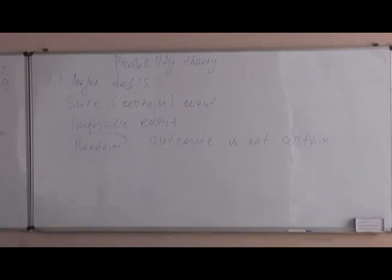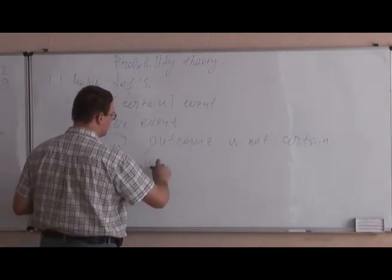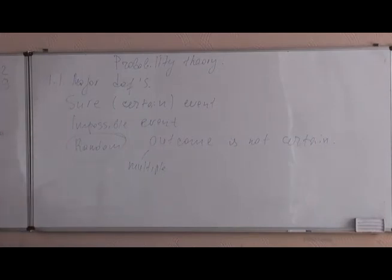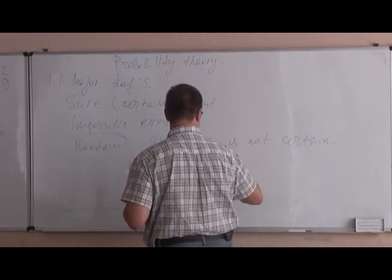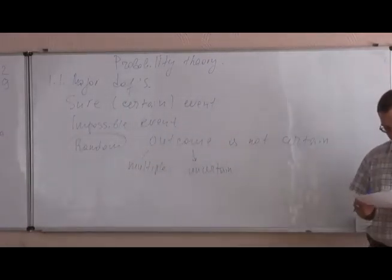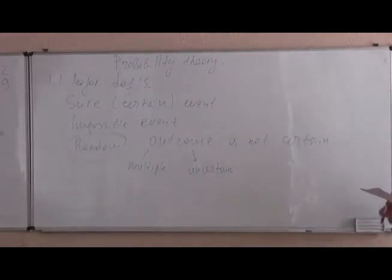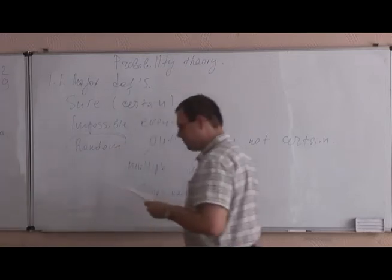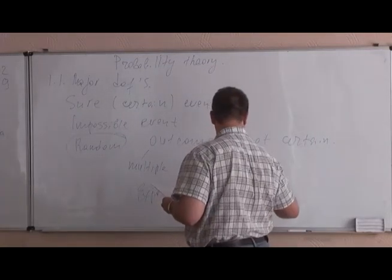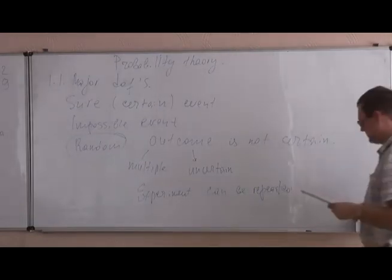For random events, we can define several types of outcomes. Outcomes can be multiple, which means more than one outcome is possible. Outcomes are uncertain, which means we don't know what will happen. What is important is the repetition of the experiment — the experiment can be repeated, and can be repeated with identical conditions.